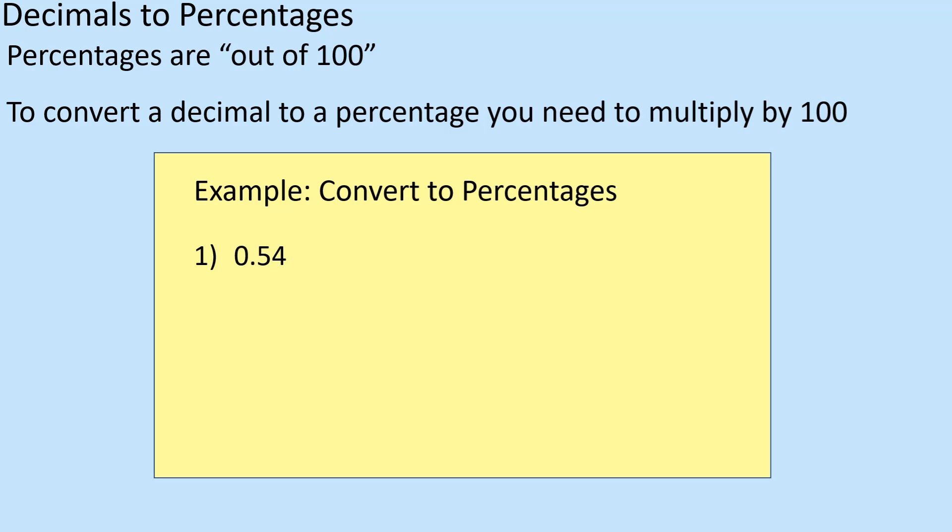So to convert to percentages: 0.54 is 54%, and 0.025 is going to be 2.5%.